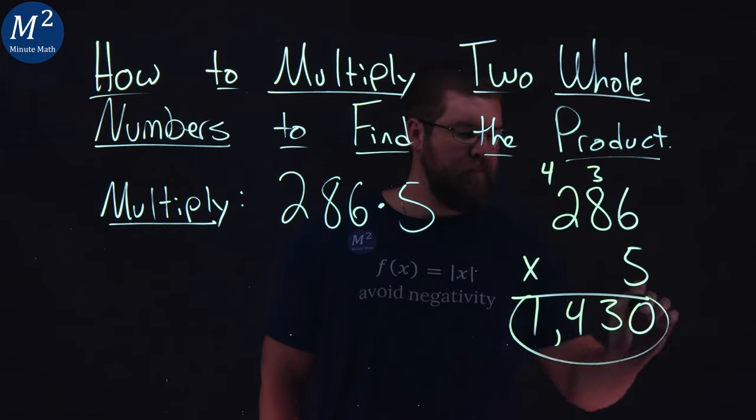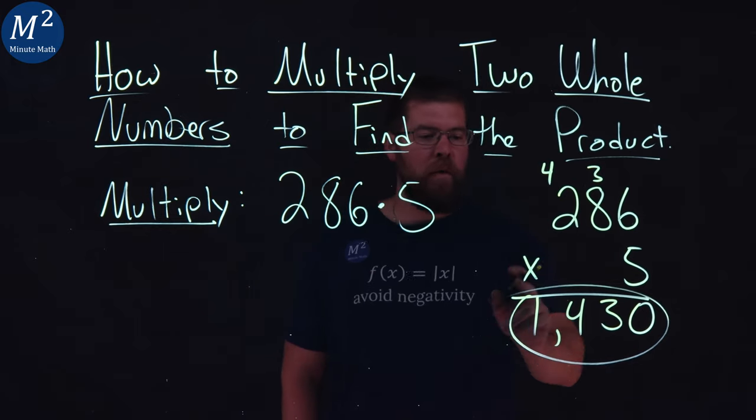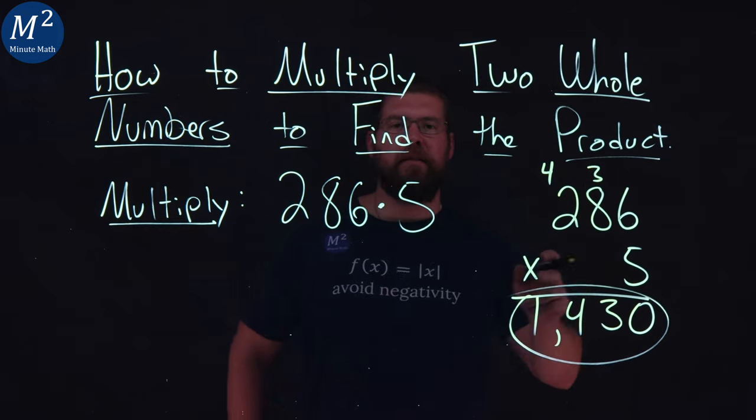And there we have it. 286 times 5 is 1,430.